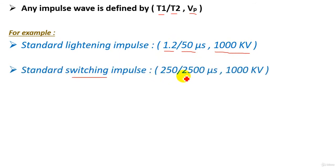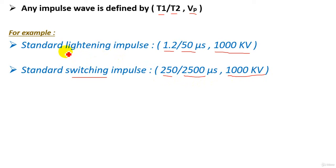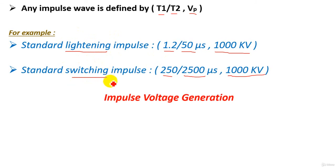For the standard switching impulse, the waveform is 25/2500 microseconds and 1000 kilovolts — meaning a rise time of 25 microseconds, a tail time of 2500 microseconds, and a peak voltage of 1000 kilovolts. So we have two standard impulse waveforms that can be produced in the lab: the standard lightning impulse and the standard switching impulse.